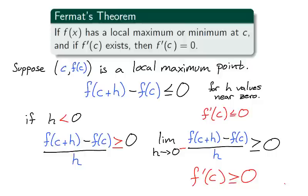In a nearly identical way, it can be shown that a local minimum point (c, f of c), which is differentiable, has a derivative of f prime of c being zero.